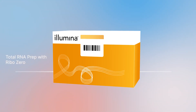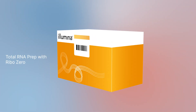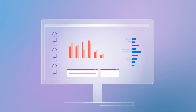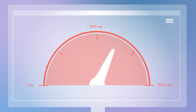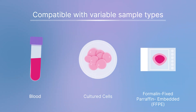For total RNA library preparation, Illumina offers the Total RNA Prep with RIBO0+, which provides exceptional performance for the analysis of coding and multiple forms of non-coding RNA. This kit supports a broad range of RNA inputs from 1 nanogram to 1000 nanograms, and is compatible with variable sample types, including formalin-fixed paraffin-embedded (FFPE) and other low-quality samples.